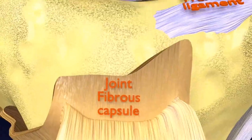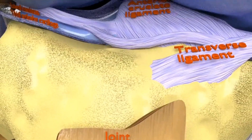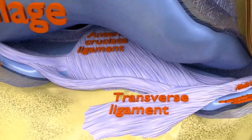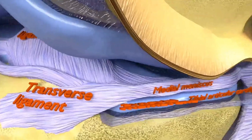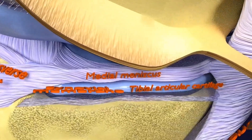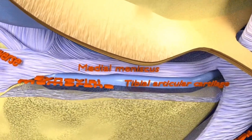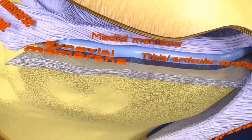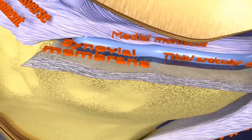Tibiofemoral: the medial and lateral condyles of the femur articulate with the tibial condyles. It is the weight-bearing component of the knee joint.